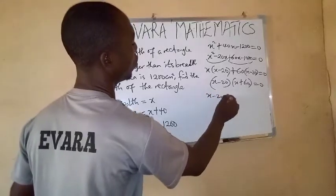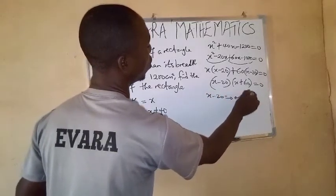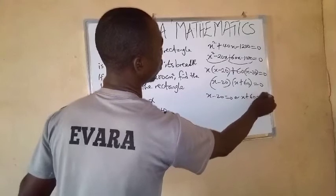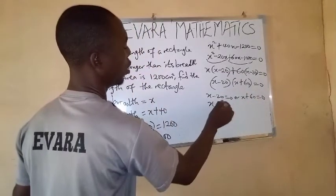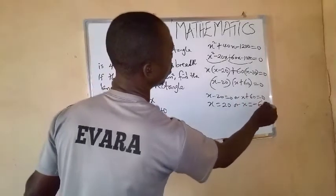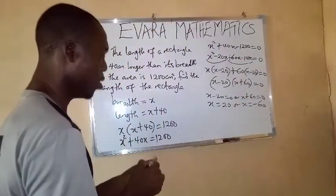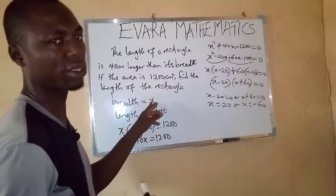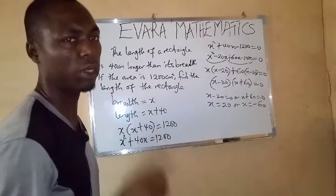So you will now say x minus 20 equals to 0 or x plus 60 equals to 0. So x equals 20 or x equals minus 60. But remember, we are talking about the breadth, and the breadth of a rectangle cannot be negative.